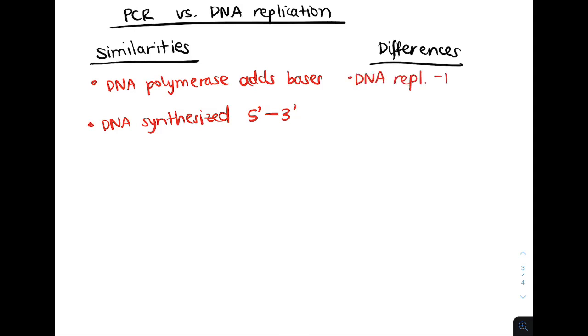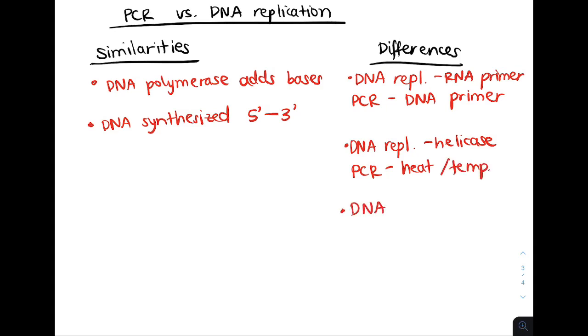One difference is that in DNA replication, we use RNA primers, while in PCR, we use DNA primers. In DNA replication, we also use helicase to open the strands, but in PCR, we will heat the DNA in order to denature it.